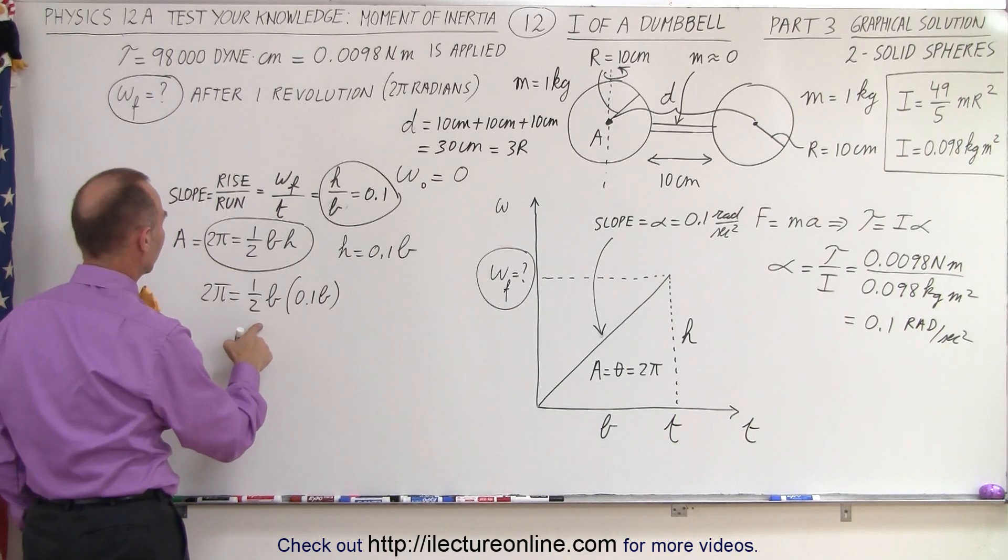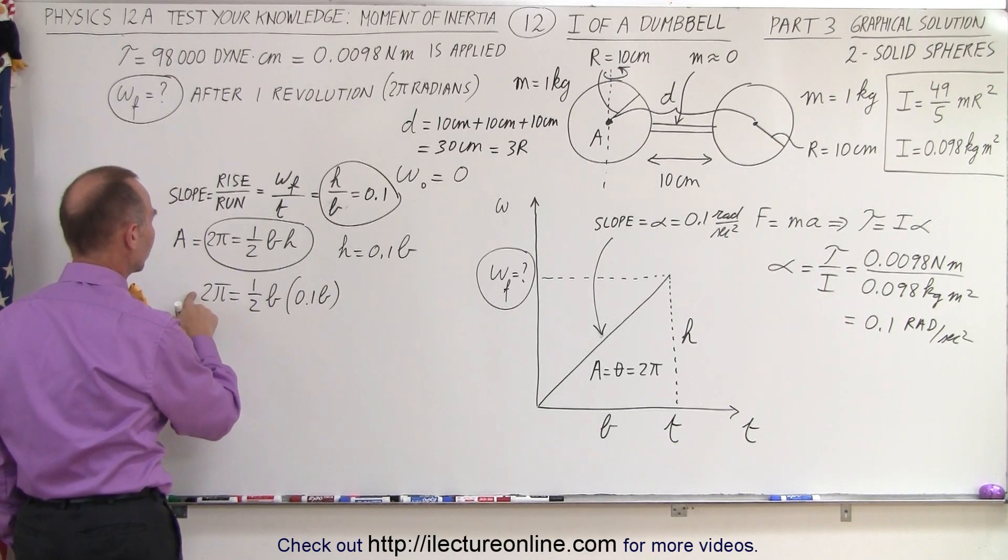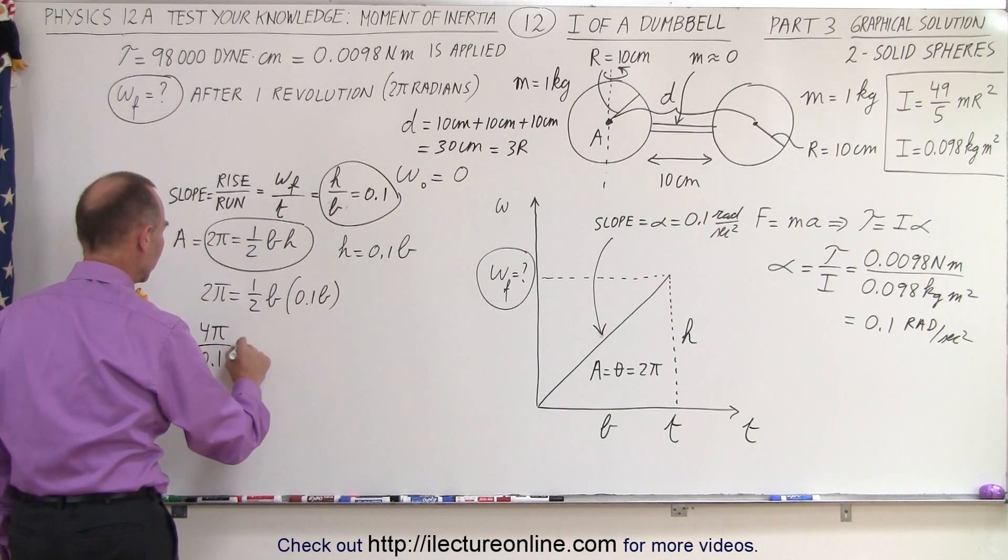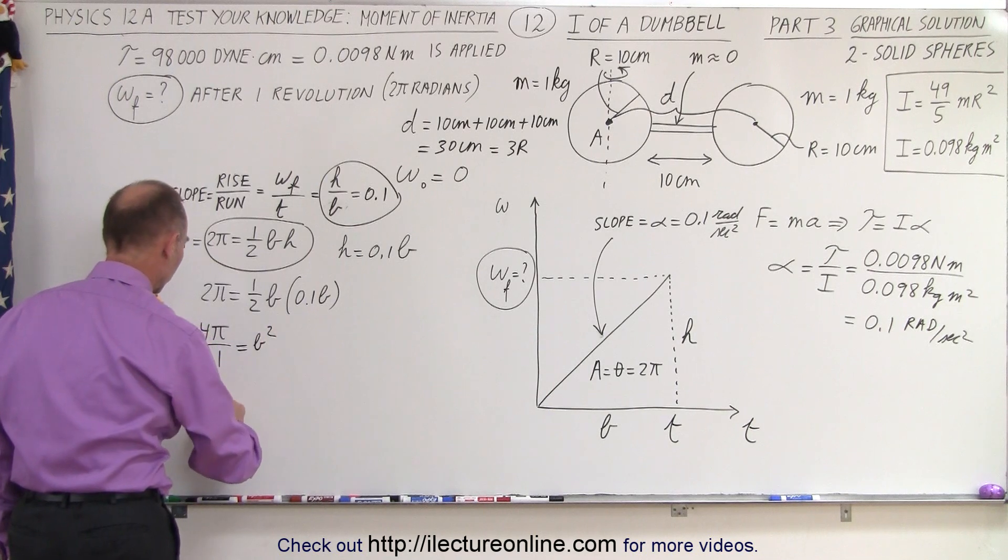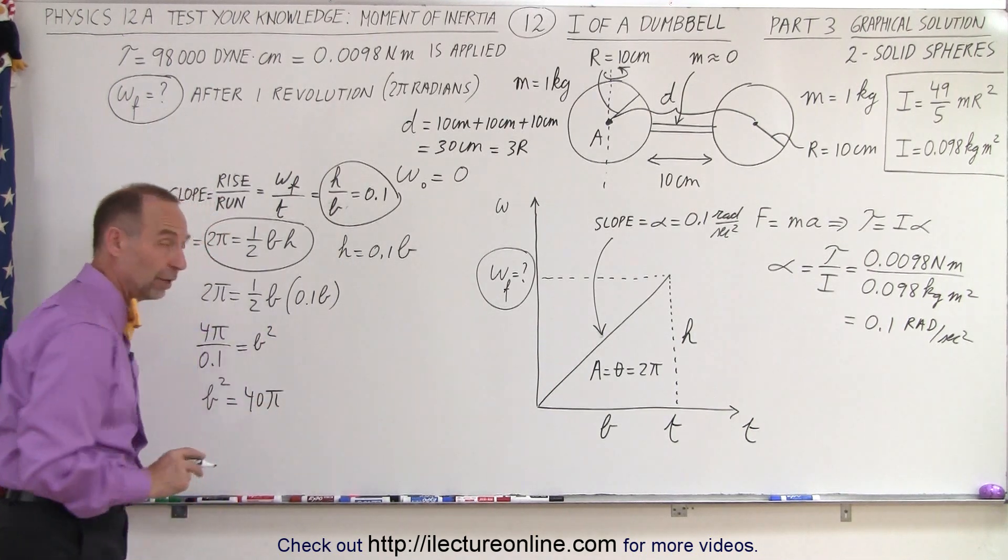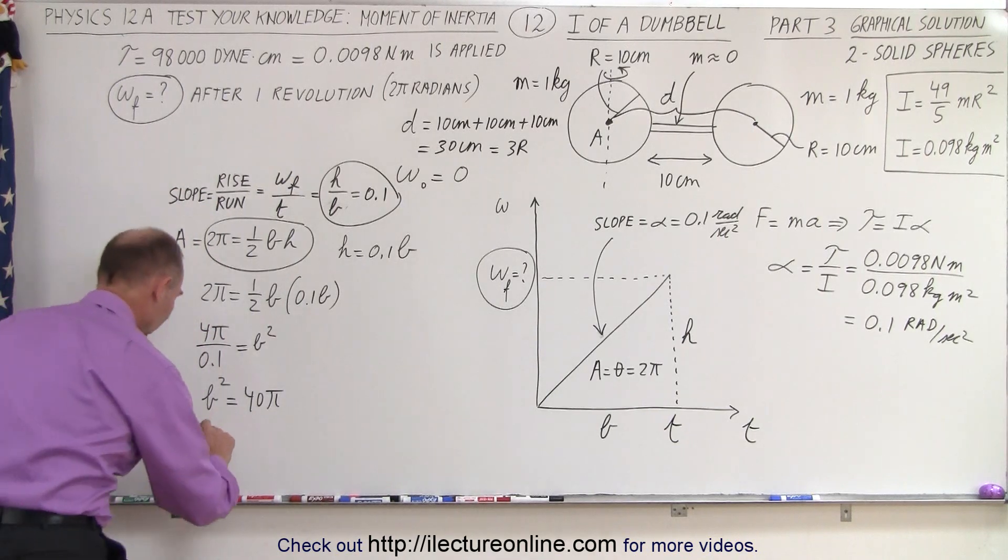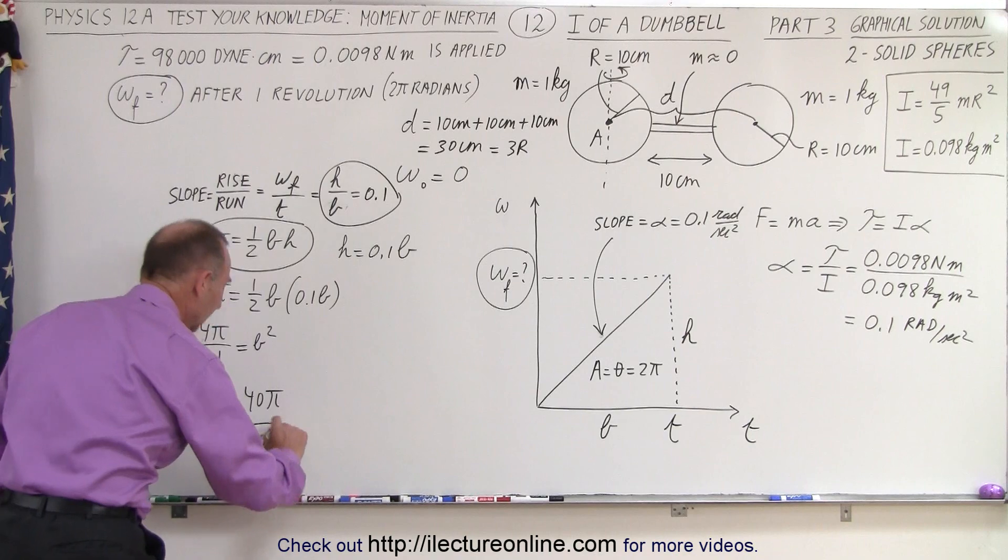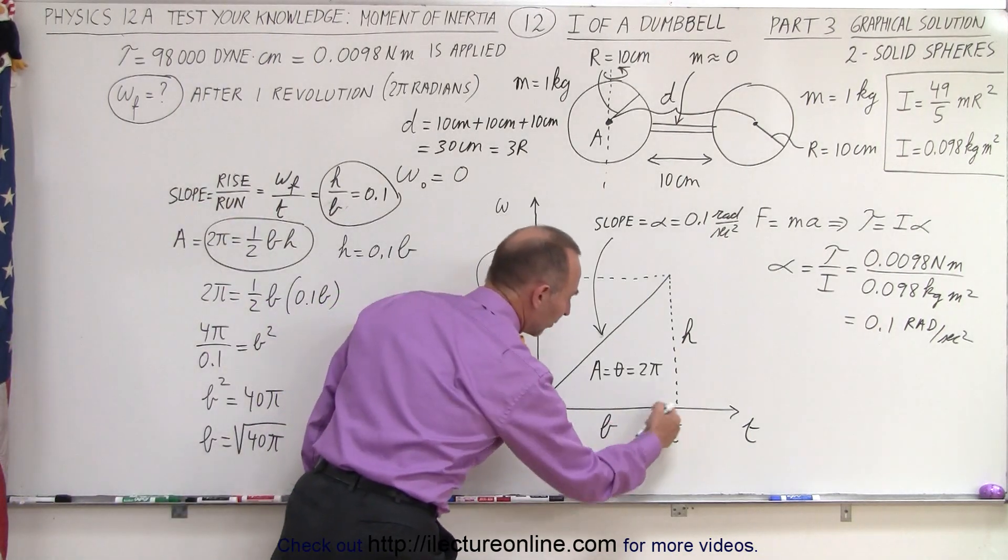Which means that if I multiply this by 2, that's 4 pi, and divide by 0.1, I get 4 pi divided by 0.1 is equal to the base squared, or the base squared is equal to 40 pi. So, if I try to find the base, I can say that the base is equal to the square root of 40 pi, and the base represents the time.